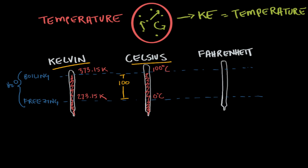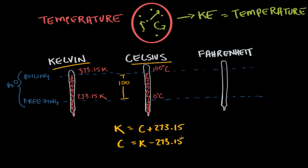To find the temperature in Kelvin, take the temperature in Celsius and add 273.15. So for the freezing point of water: zero degrees Celsius plus 273.15 gives us 273.15 Kelvin. To go the other direction, take the Kelvin value and subtract 273.15. For example, 373.15 Kelvin minus 273.15 gives us 100 degrees Celsius.